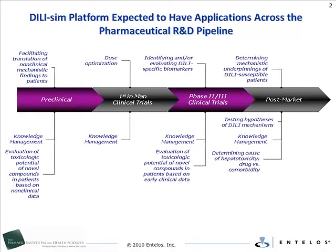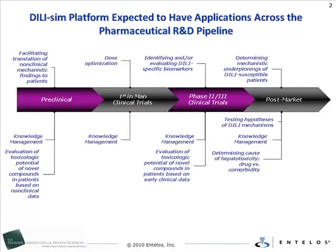One of the unmet needs regarding DILI is the challenge that pharmaceutical companies and regulatory agencies face when patients show increases in liver enzymes in Phase II and III clinical trials. Translation of preclinical hepatotoxicity testing to human patients is often inadequate in addressing this challenge. While the primary goal is to determine whether the cause of hepatotoxicity signals is due to the compound or the patient's comorbidities, the number of patients who present with toxicity is too small to reach any statistically significant conclusions based on the existing clinical data.